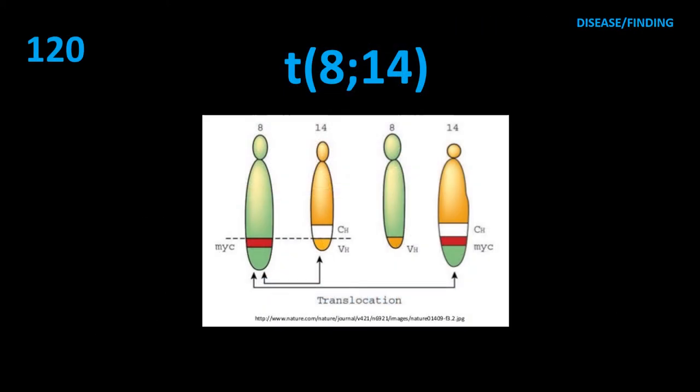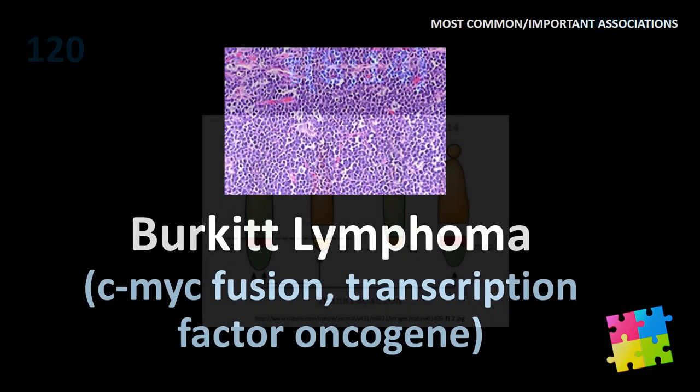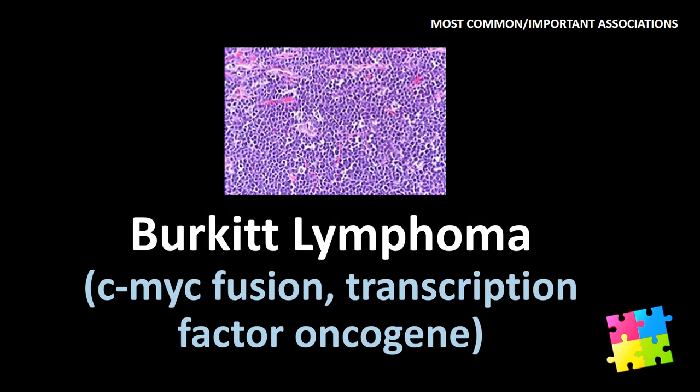Item 120: Translocation 8;14 — Burkitt lymphoma. C-MYC fusion, transcription factor oncogenes.